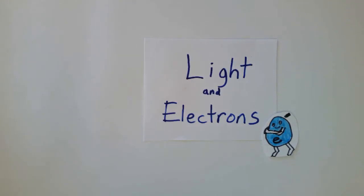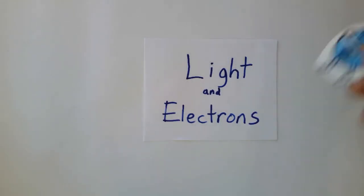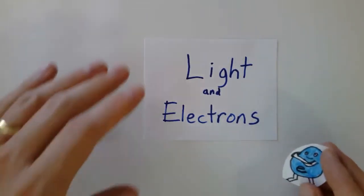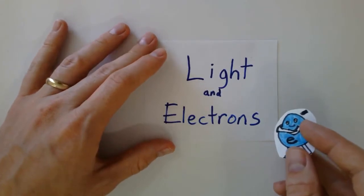Today we're going to be talking about light and electrons — more specifically, how electrons move in an atom and how that produces or generates light.